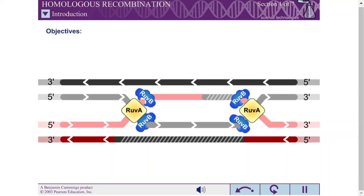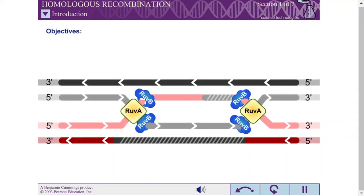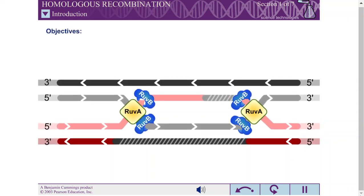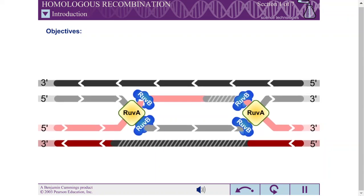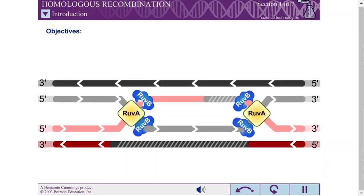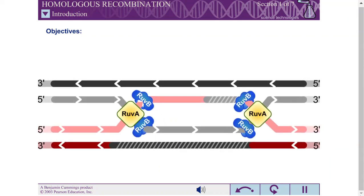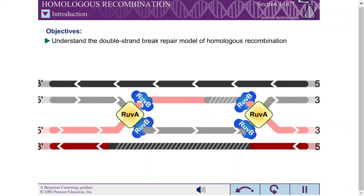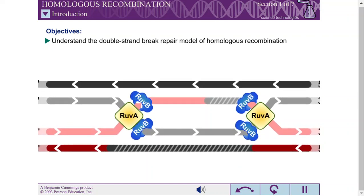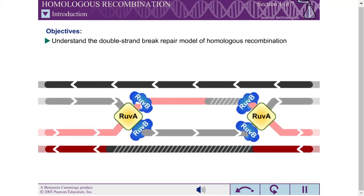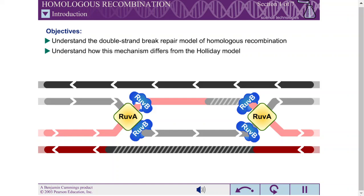When you have completed this exercise, you should understand the double-strand break repair model of homologous recombination, understand how this mechanism differs from the Holliday model, and understand the cellular functions of homologous recombination.